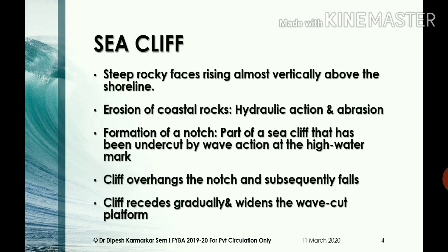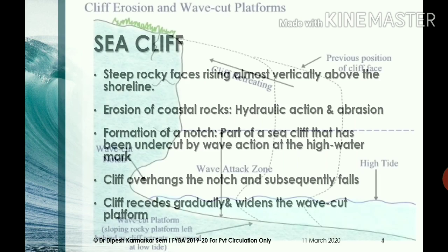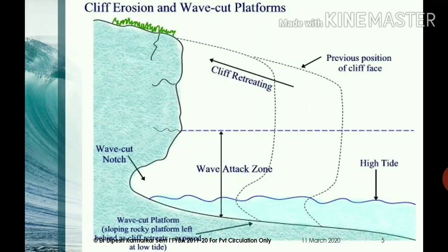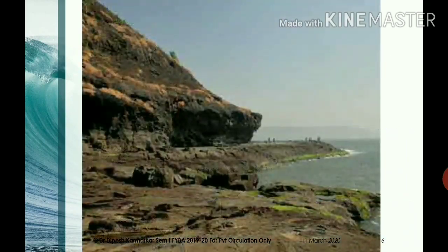Let us first talk about sea cliffs. Sea cliffs are steep rocky coasts rising almost vertically above seawater. The formation of a sea cliff begins with the erosion of coastal rocks through the mechanisms of hydraulic action and abrasion by breaker waves. As you can see in this diagram, this results in the formation of a notch — a part of a sea cliff that has been undercut by wave action at the high water mark.